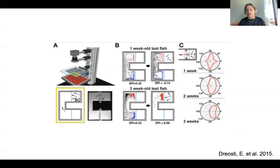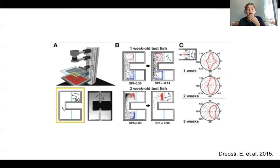This setup here gives us a horseshoe-shaped tank where the fish are placed, with two chambers on each side. They have a habituation period where they're placed in there without any conspecifics, and then another period where the conspecifics are placed in there to see if they have a preference for the side with the conspecific friends. We see that one-week-old test fish don't really have a preference — they don't care whether or not their friends are there. But three-week-old fish are more mature, and they actually really like spending time around the conspecifics and show a preference for that side.